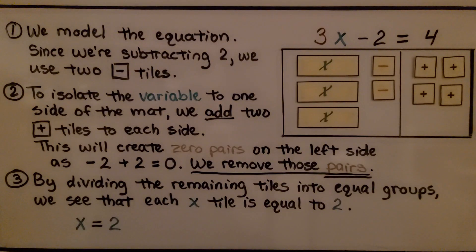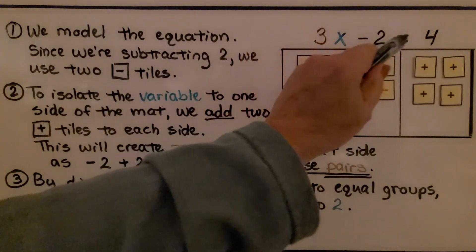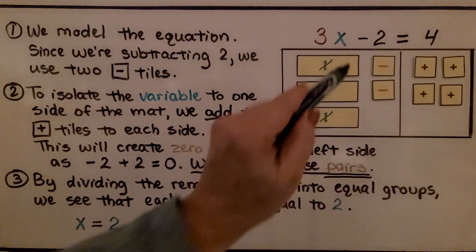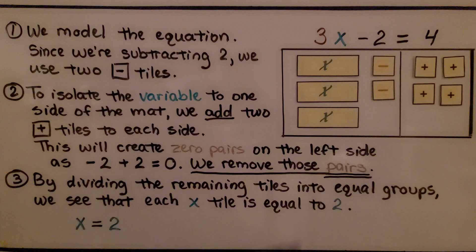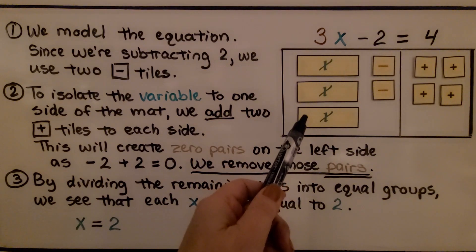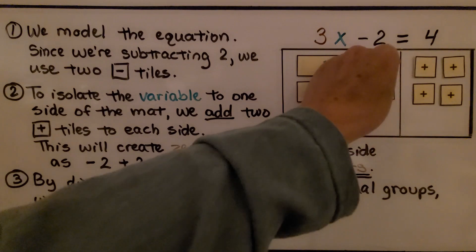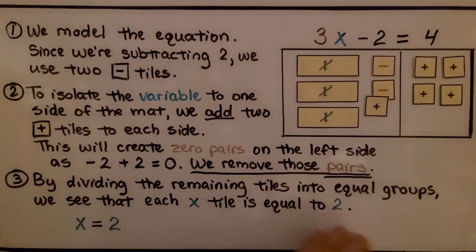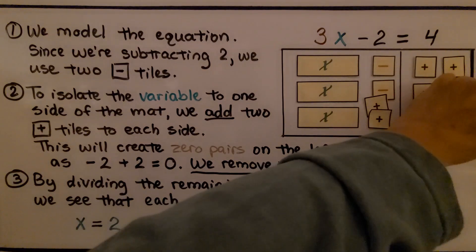Let's try another one. We model the equation: we have 3x minus 2 is equal to 4. Since we're subtracting 2, we use 2 minus square tiles. To isolate the variable to one side of the mat, we add 2 of the plus tiles to each side — 1, 2 on the left, and 1, 2 on the right.